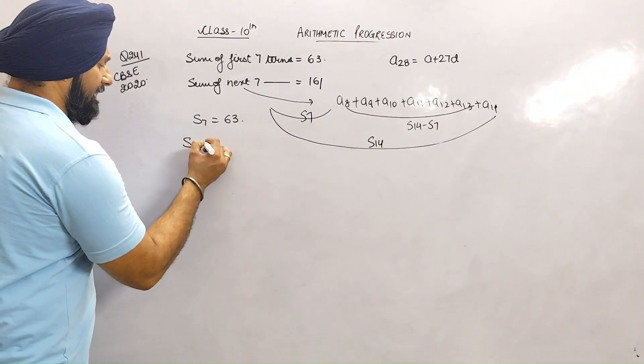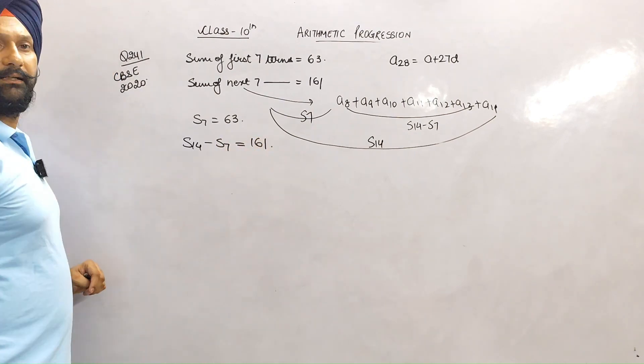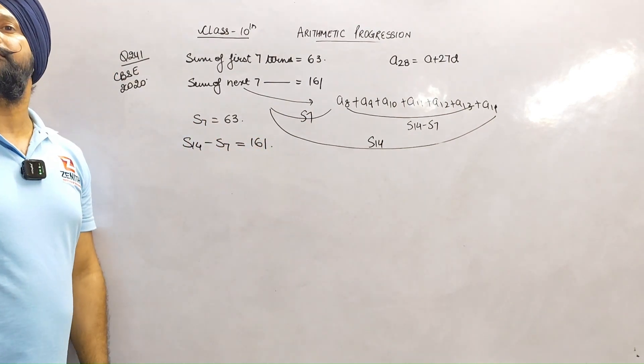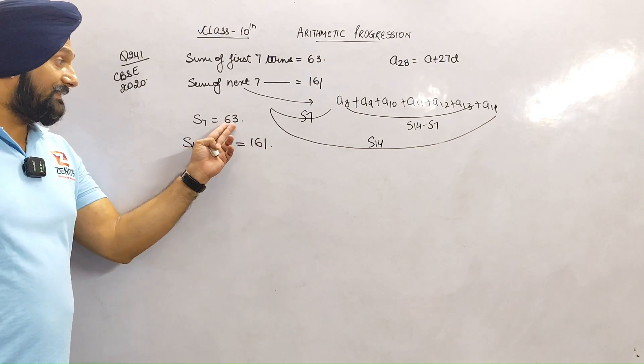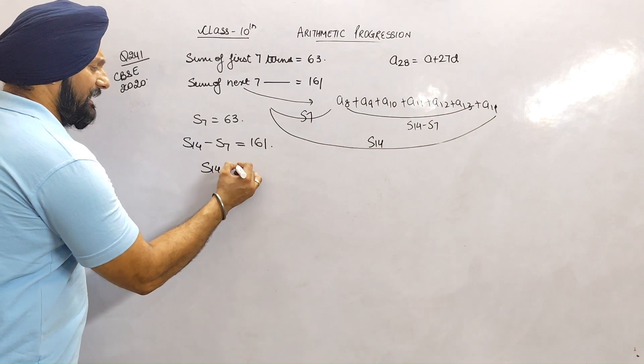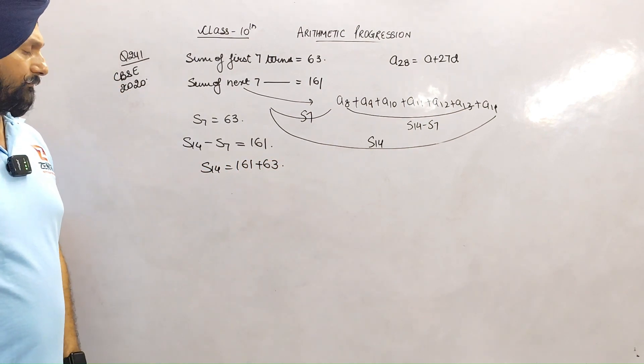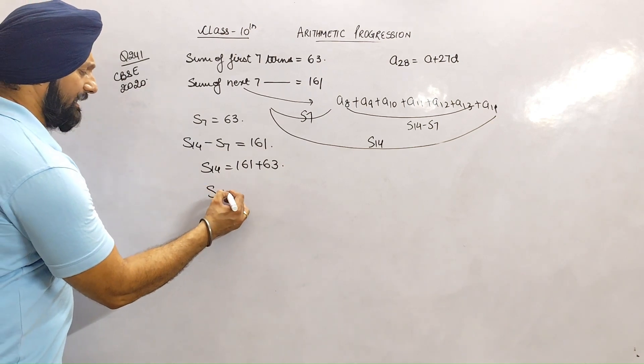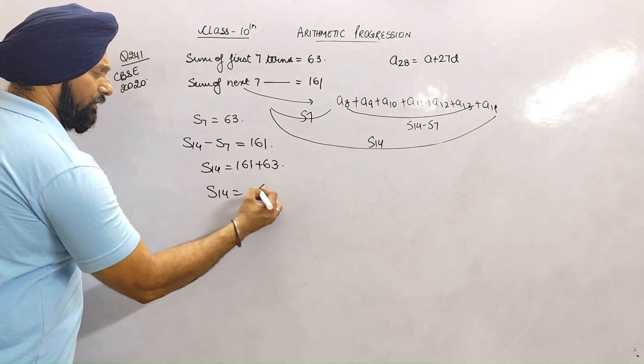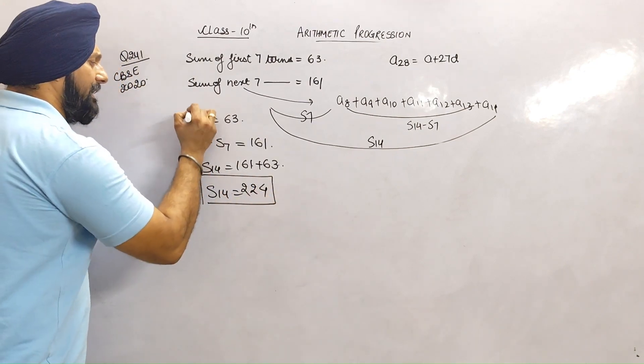What is the value of S7? 63 is already given. So S14 will be 161 + 63, which equals 224.